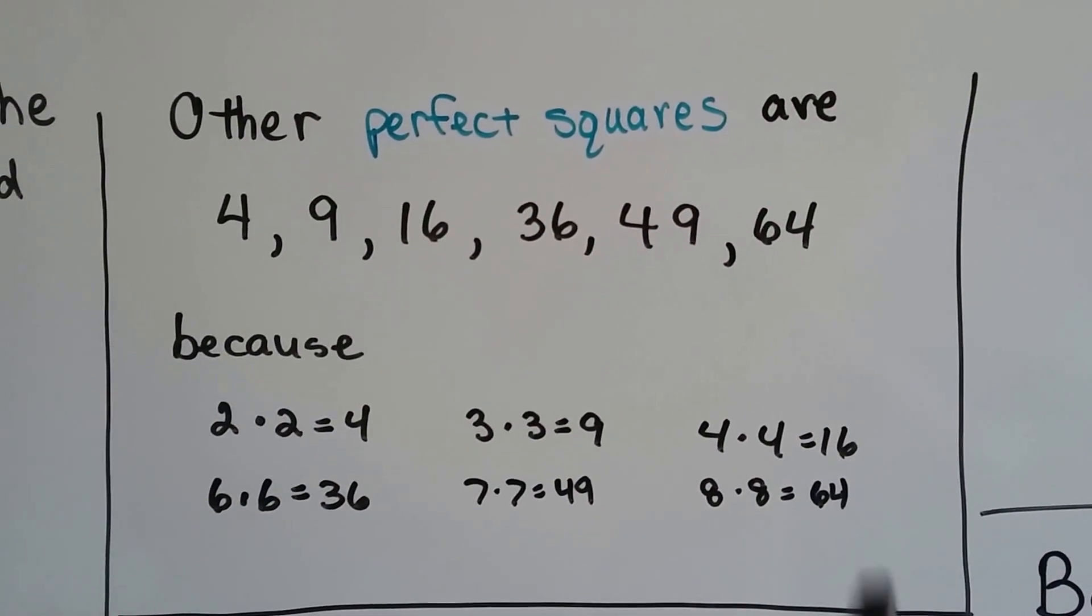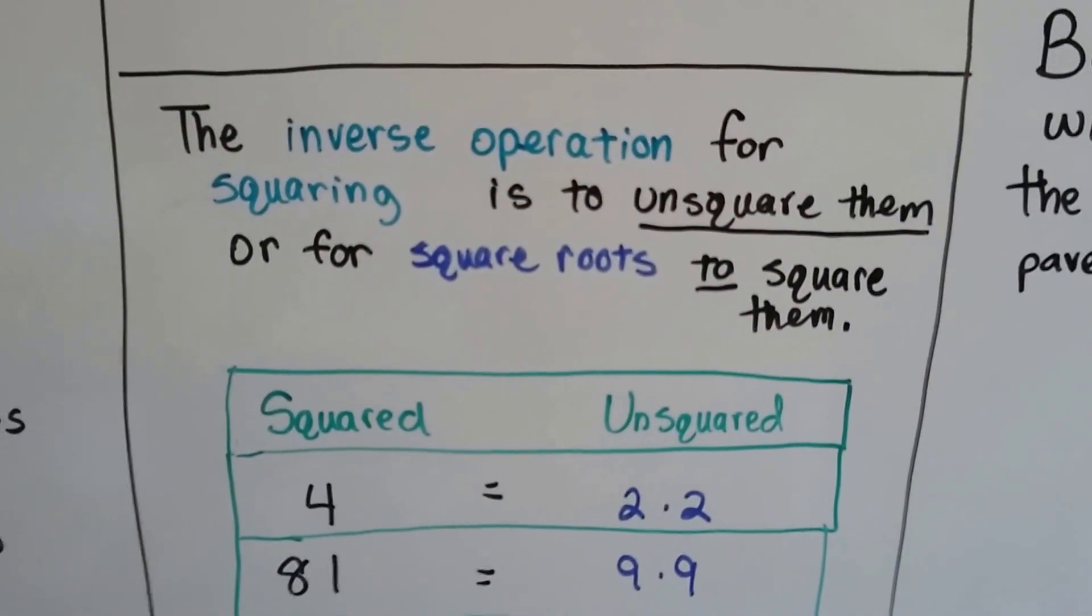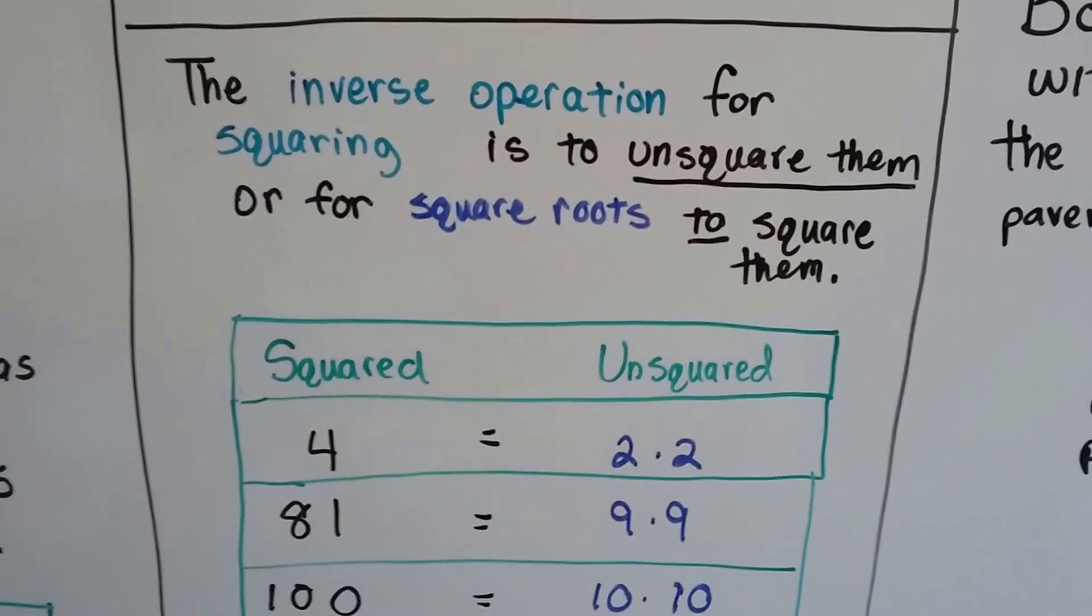So that is the square root of the number. The inverse operation for squaring is to unsquare them or for square roots to square them.